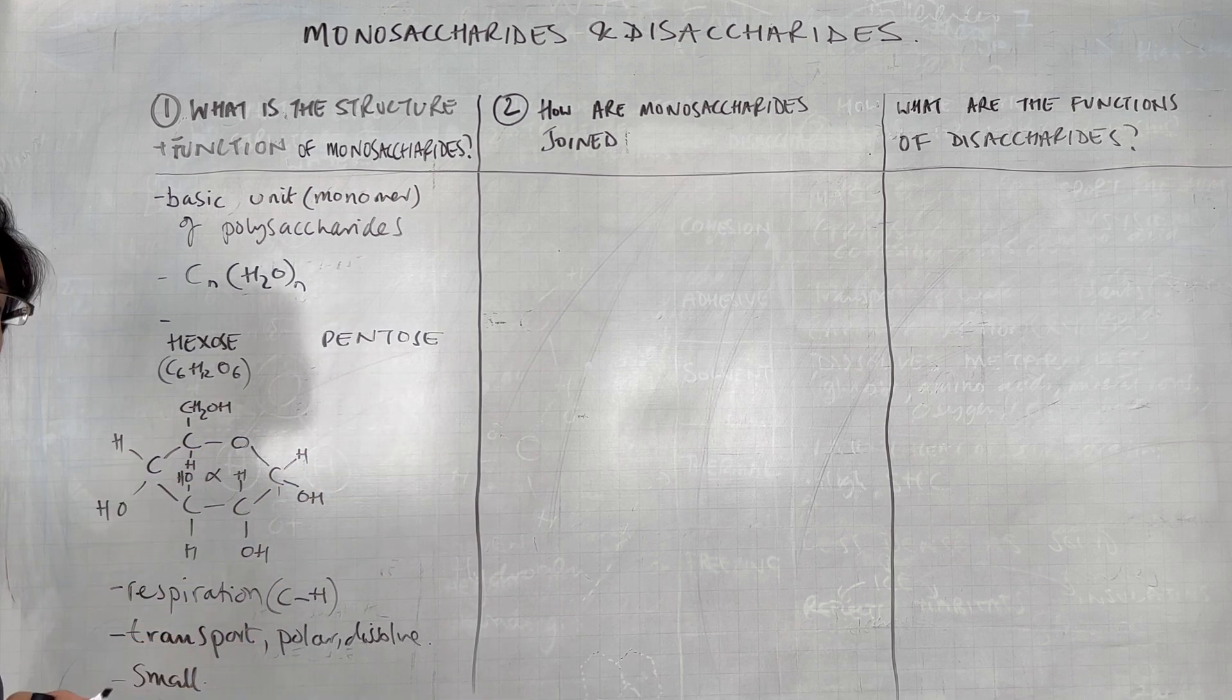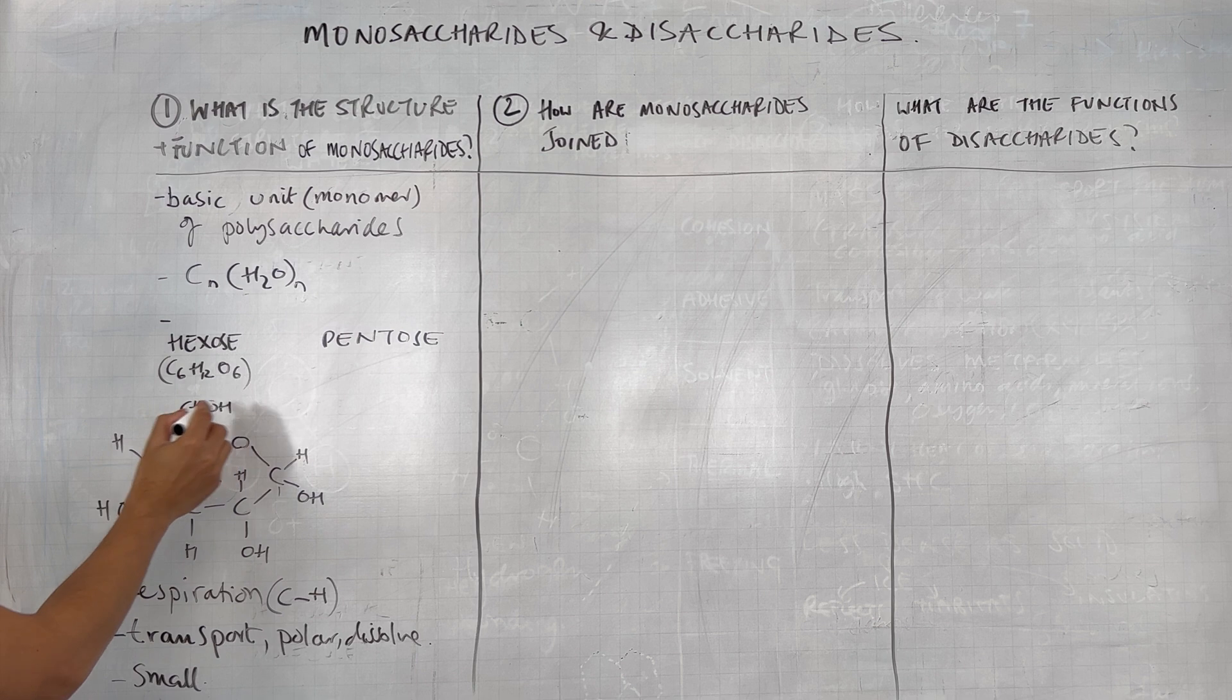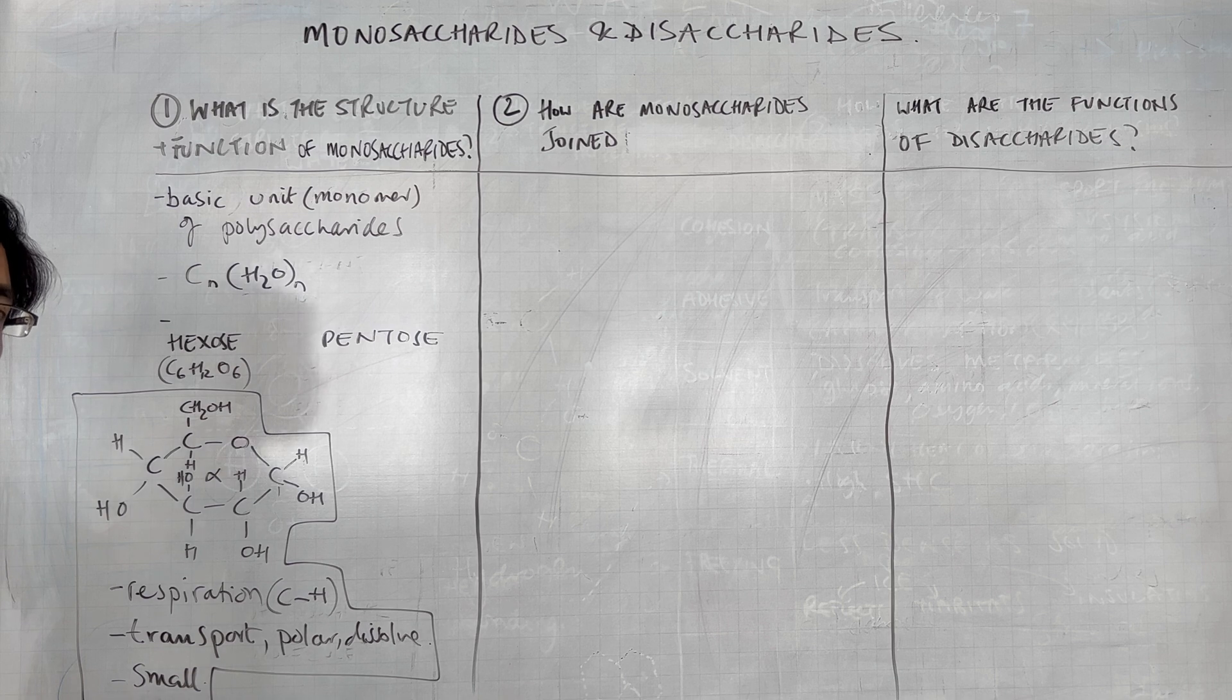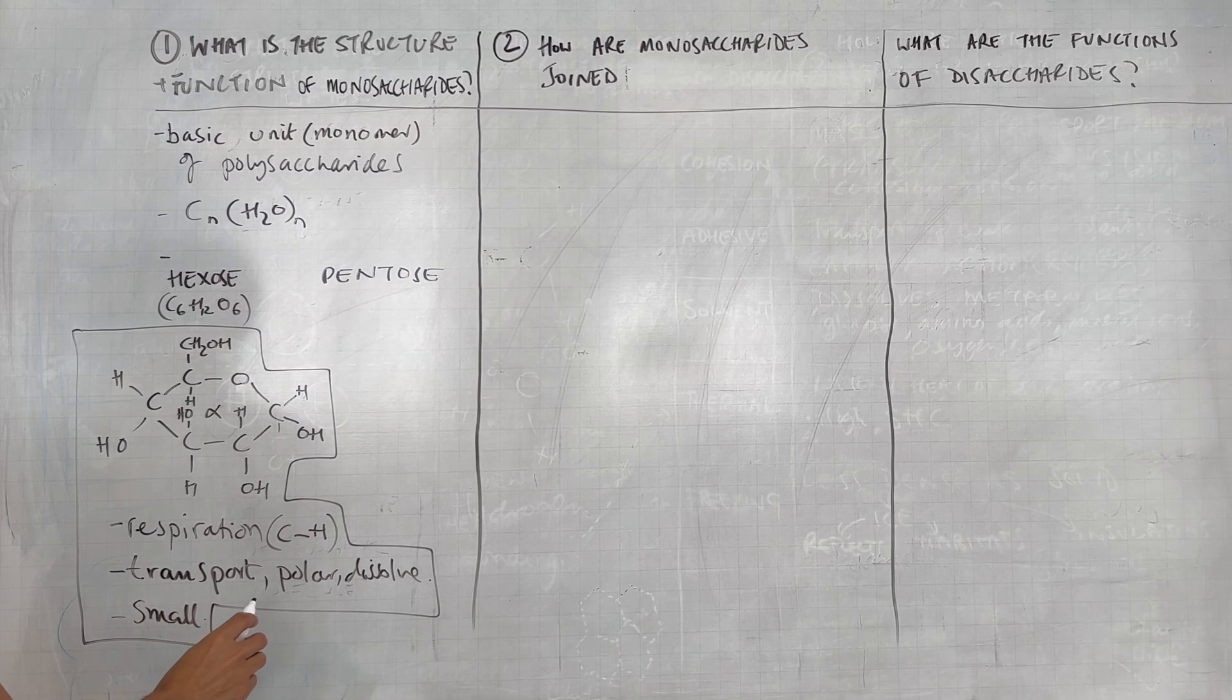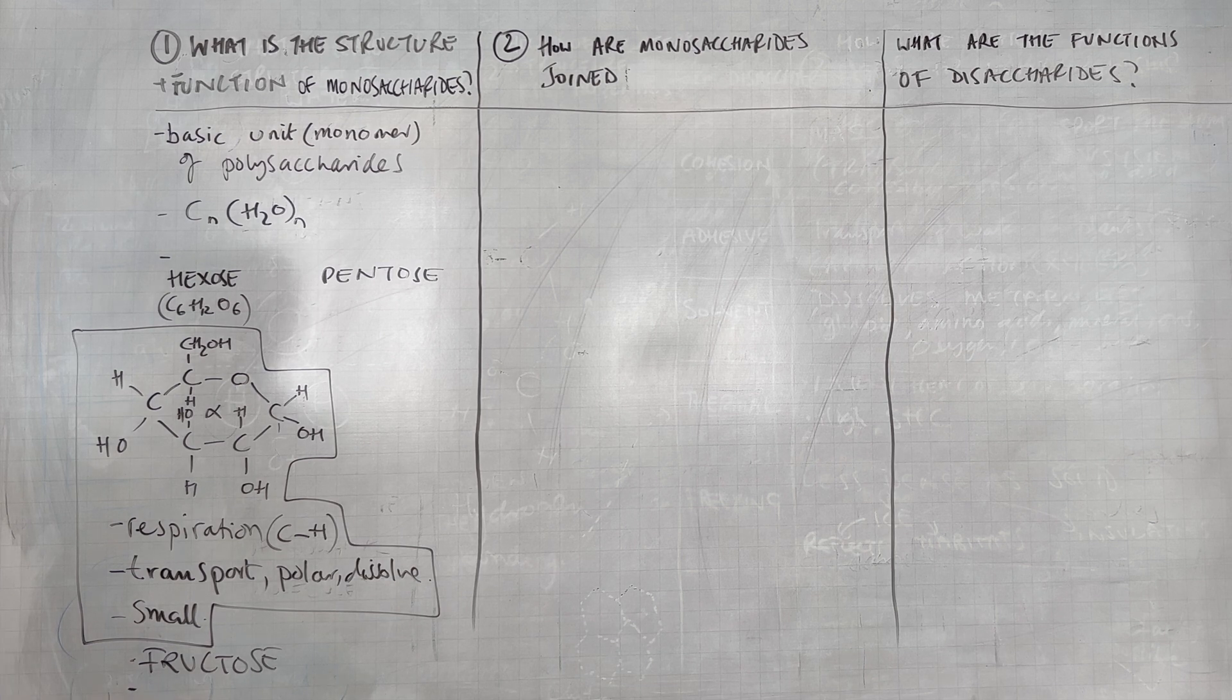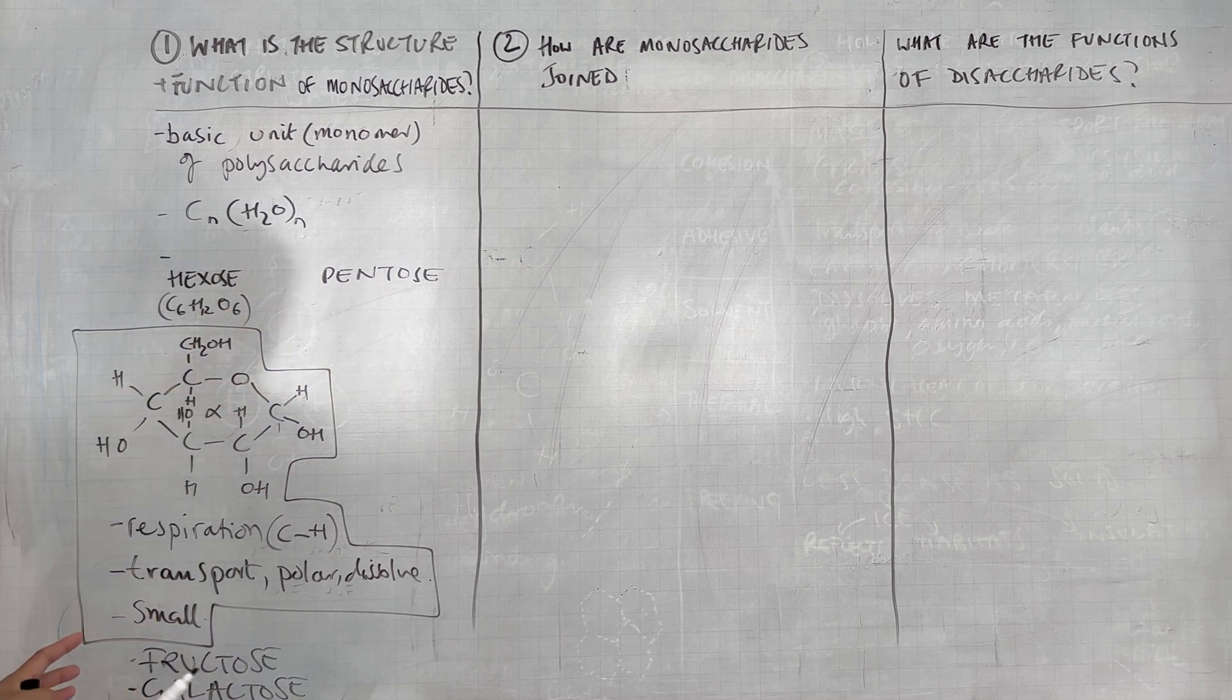So that is our hexose example. We're also going to look at some other examples of monosaccharides that you need to know about. But I won't go into too much detail about those. So we have glucose. Let me just put a little box around that because glucose obviously comes up quite a bit. But are there other hexoses that you need to know about? So other hexoses include fructose. So you need to know about fructose and galactose. You don't need to know them structurally. You just need to know of them.